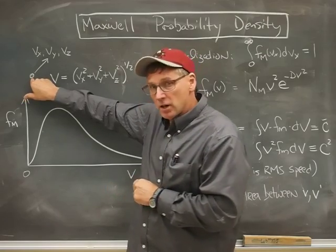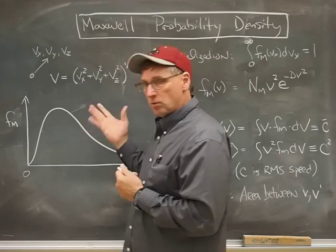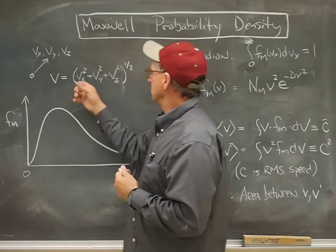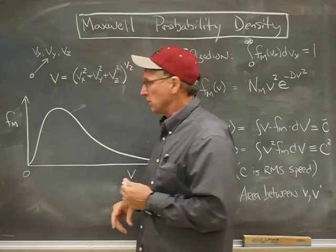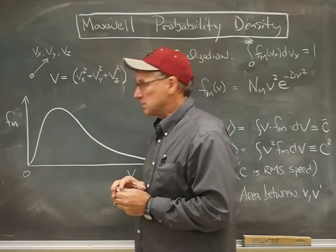I've got a molecule here, and it's going with some velocity components in the x, y, and z direction. If I want to know the speed, I take the square of each one of those components, add them up, take the square root, and now we have a speed.